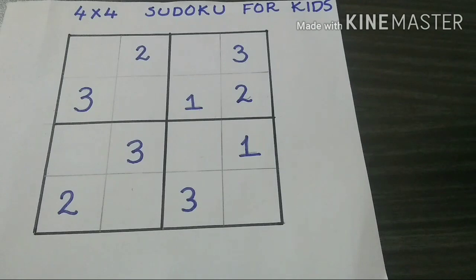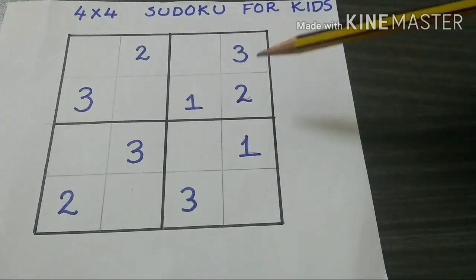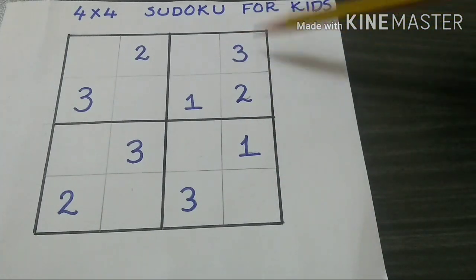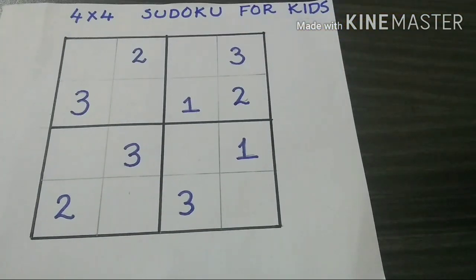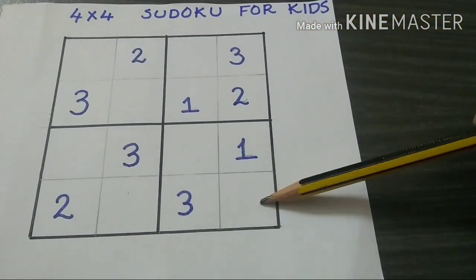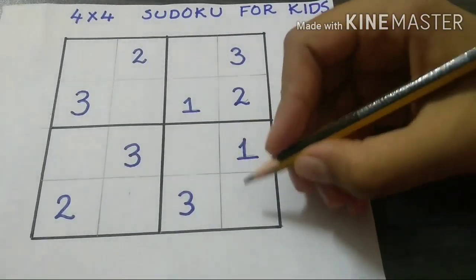For example, when you consider this column, there is 1, 2, 3. 4 is the only number which is remaining, so we have to write 4.